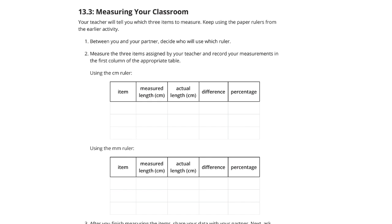The teacher or your teacher would give you three items to measure using the paper rulers from the earlier activity. Between you and your partner, decide who will use which ruler. Measure the three items assigned by your teacher and record your measurements in the first column of the appropriate table. So, you have a centimeter ruler and a millimeter ruler here.